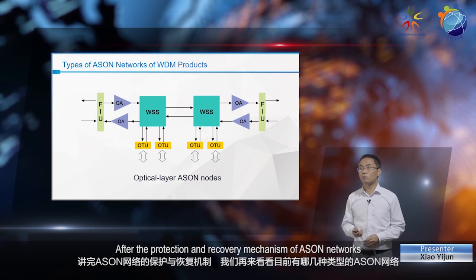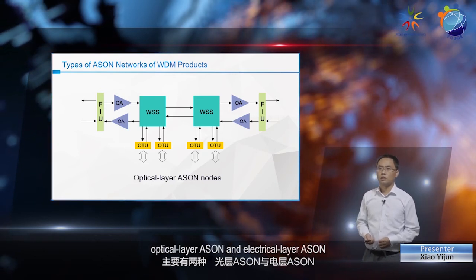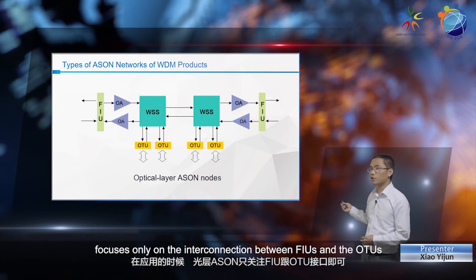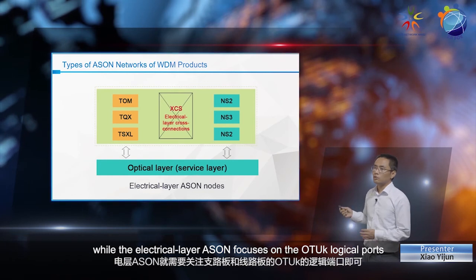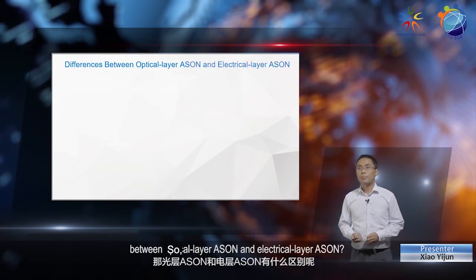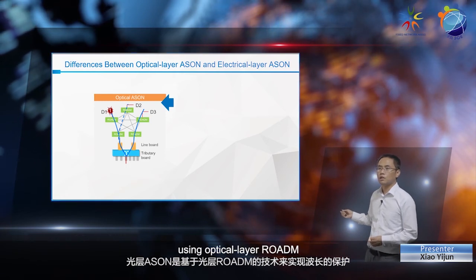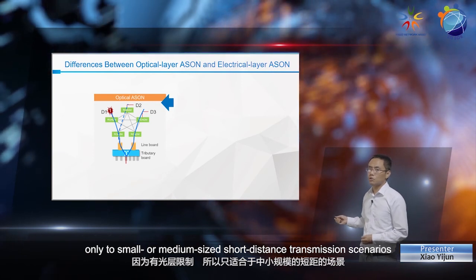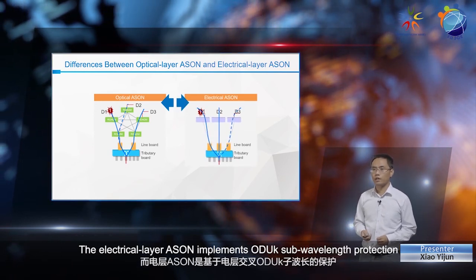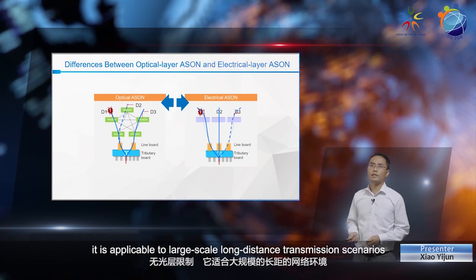After reviewing the protection and recovery mechanisms of ASAN networks, we can now have a look at the types of ASAN networks. There are two main types: optical layer ASAN and electrical layer ASAN. The optical layer ASAN focuses only on the interconnection between FIUs and OTUs, while the electrical layer ASAN focuses on the OTUK logical ports on tributary boards and line boards. Optical layer ASAN implements wavelength protection using optical layer ROADM, and is applicable only to small or medium-sized short-distance transmission scenarios due to optical layer restrictions. The electrical layer ASAN implements ODUK sub-wavelength protection based on electrical layer cross connections, and without optical layer restrictions, is applicable to large-scale long-distance transmission scenarios.